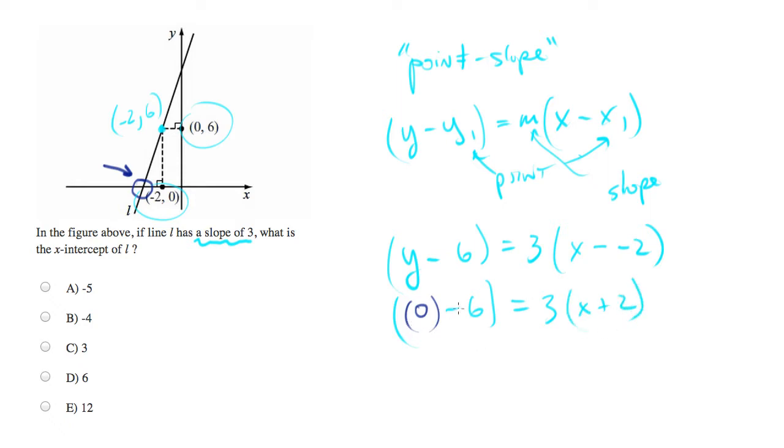We'll end up with... Let's divide both sides by 3. And we'll end up with negative 2 equals x plus 2. Let's subtract 2 from both sides. And we'll end up with negative 4 equals x. That will be the coordinate of our x-intercept, which is b.